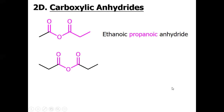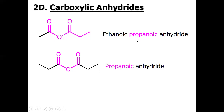In the second example, both sides have a three-carbon chain (propanoic), making it a symmetrical anhydride. We simply write 'propanoic anhydride,' since it is understood that propanoic groups appear equally on both sides of the anhydride oxygen.